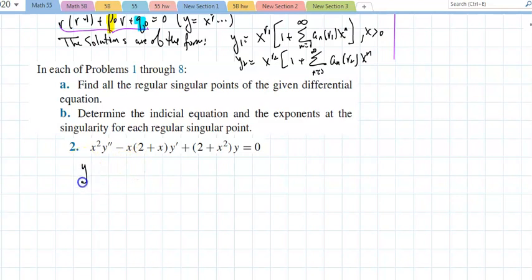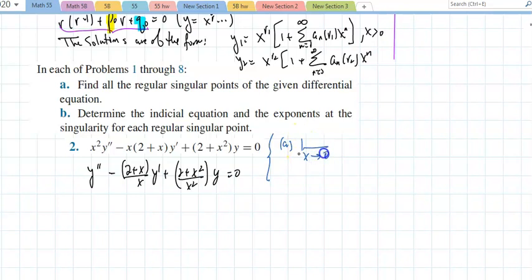If I start with y double prime minus 2 plus x over x y prime plus 2 plus x squared over x squared y, that would be 0. If I want to take the limit as x approaches 0, because that's the only singular point we have, of x times negative 2 minus x over x, those cancel out. You throw the 0 in, you'll get a negative 2. You call that p sub 0. And if you take the limit as x approaches 0 of x squared times 2 plus x squared over x squared, that is also a 2. That is q sub 0.